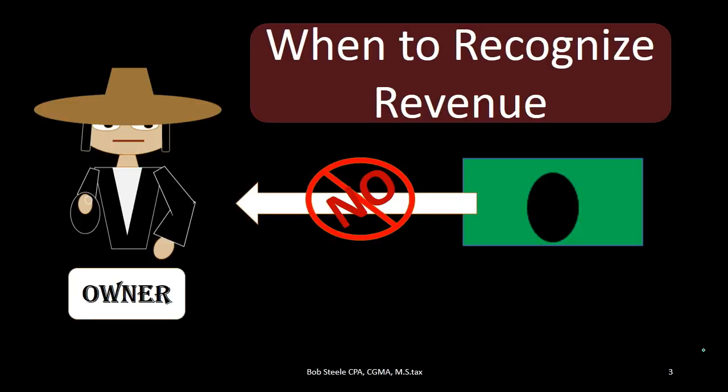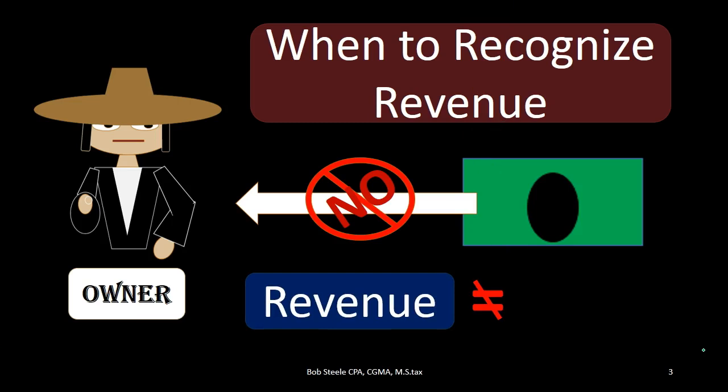The Revenue Recognition Principle has to do with when we should record revenue. When considering when revenue should be recorded, it's often thought that we should record revenue when cash is received. Although revenue may be recorded when cash is received, it should not be the driving factor of the recording of revenue. In other words, revenue is not the same thing as cash.